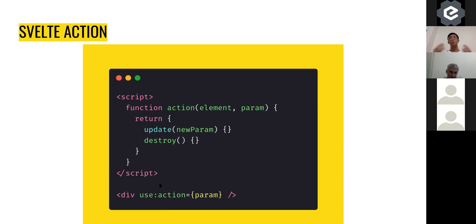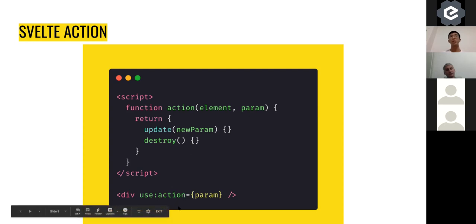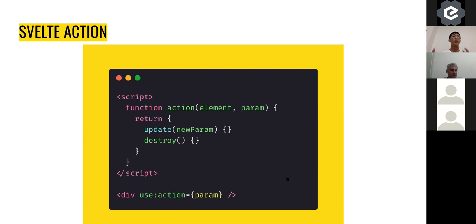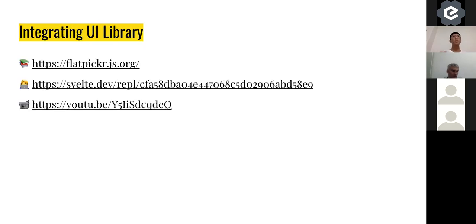To summarize Svelte actions: the function is called when an element using the action is mounted, the update method is called when params change, and the destroy method is called when the element is removed from the DOM. One example use case is integrating a UI library. I'm going to go to the Svelte REPL now and do some live coding.